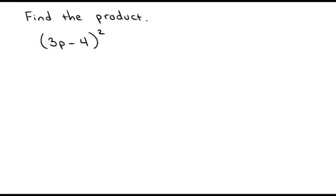We're going to find the product of 3p minus 4 quantity squared. The important thing to remember when doing this is that we're actually finding the product of the quantity 3p minus 4 times the quantity 3p minus 4.